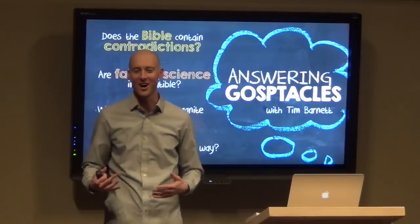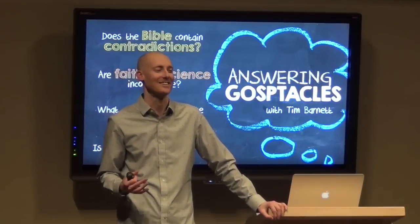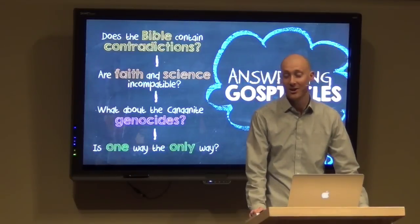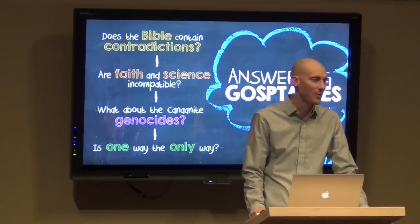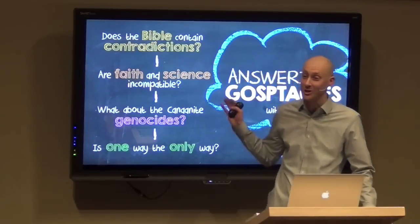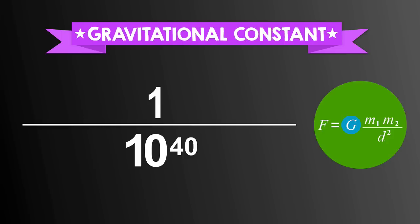The gravitational constant — the gravitational constant that's in this equation right here, that every grade 12 high school student who takes physics should learn — is finely tuned to at least one part in 10 to the 40th power. Some say even greater; I'm going to be real conservative here: one part in 10 to the 40th power.